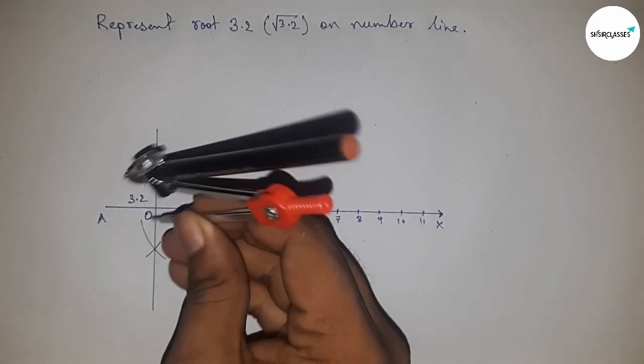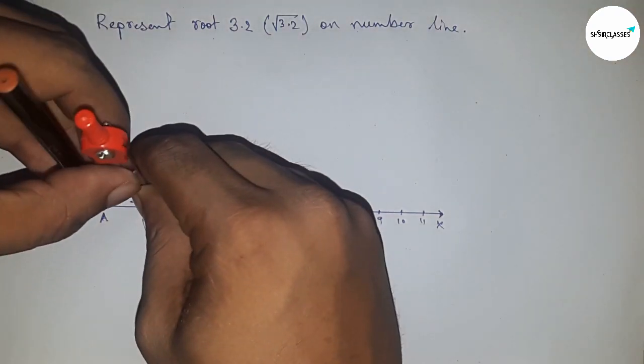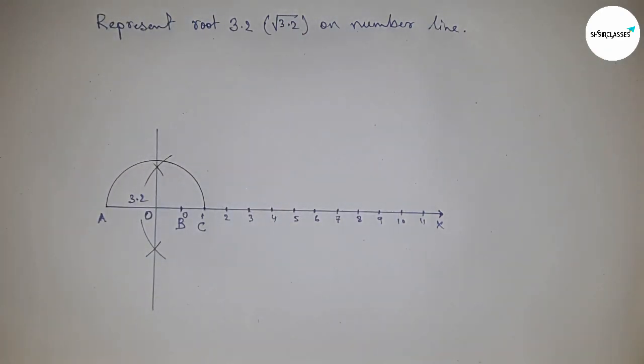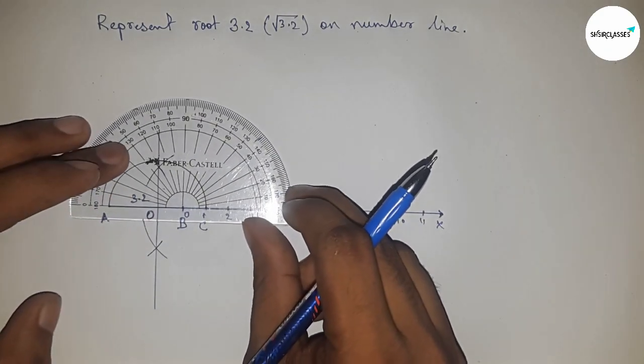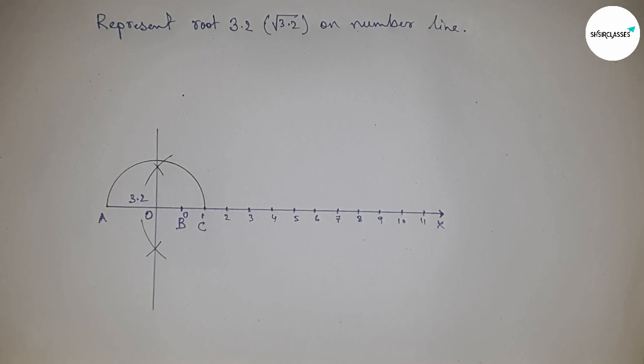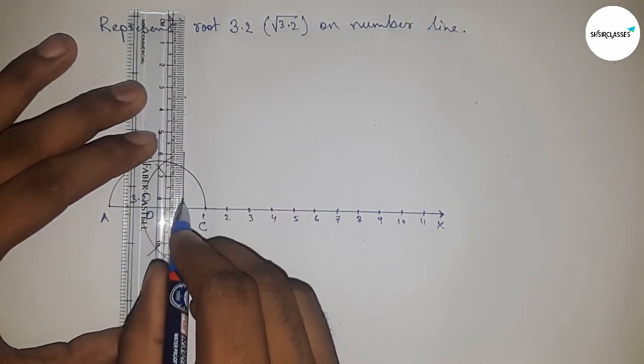Now take the distance OA and OC to draw a semicircle through points A and C. Draw a 90-degree angle at point B using a protractor, which meets the semicircle at point D.